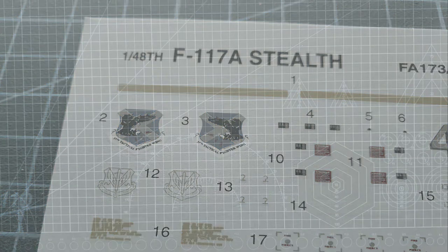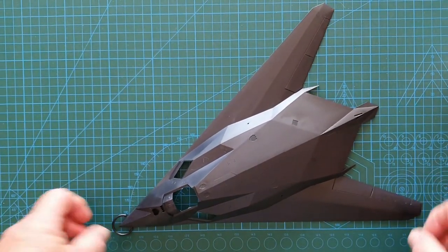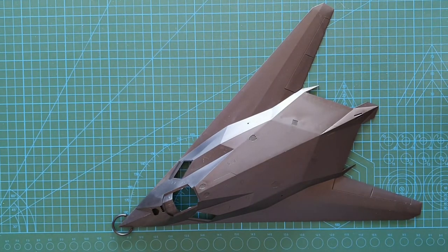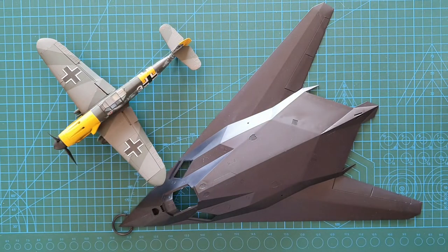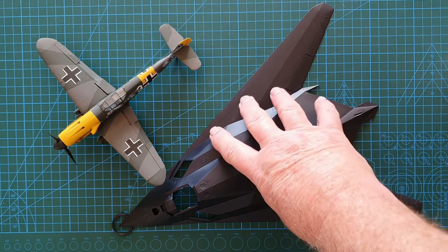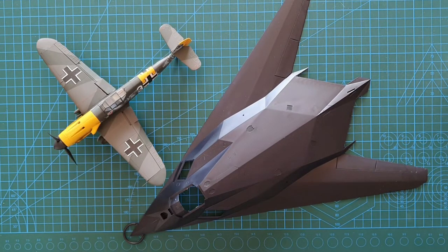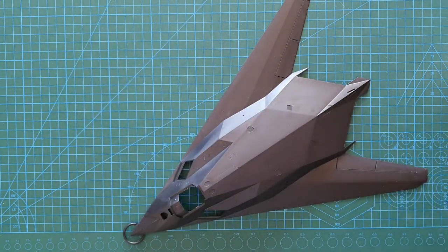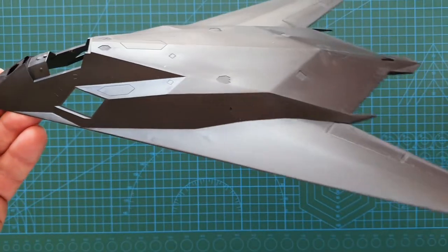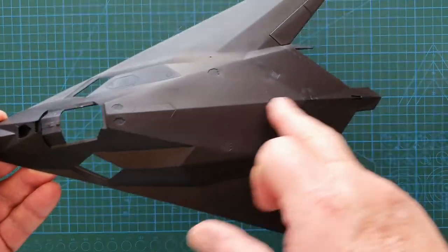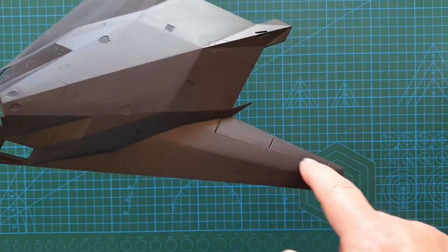So let's have a look at the sprues. We'll start with the biggest sprue, which is your upper fuselage. I'll just give you a shot of this. This is a standard 1/48 scale Messerschmitt Bf 109 compared against the stealth fighter, both of which are single pilot cockpits. So these things are quite big. It will take a reasonable amount of space on your display shelf.